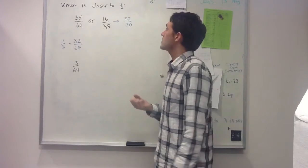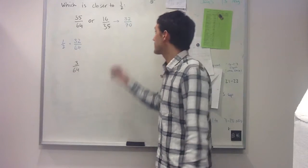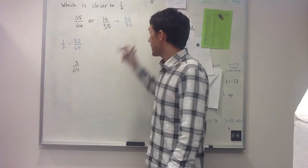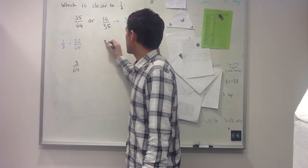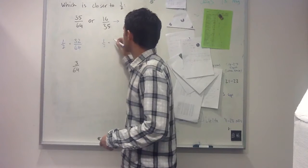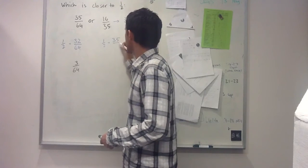Now I'm looking for the equivalent fraction that has 70 as its denominator. In this case, half of 70 is 35, so I get that a half is equal to 35/70.